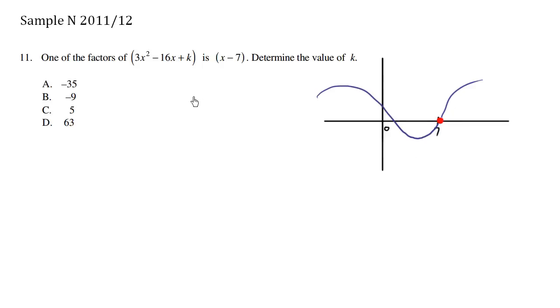So what we're going to do is write y equals 3x squared minus 16x plus k, and we know the y value is 0. The y value is 0 particularly here because it says x minus 7. So when x equals 7, we're going to set x to 7 and we can solve for k.